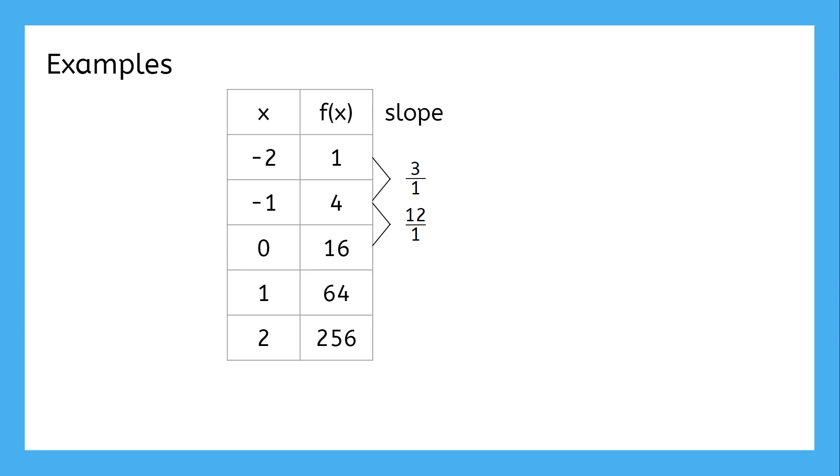For it to be exponential, there needs to be a common ratio between the slopes. Between 3 and 12, the ratio is 4. So what's the next slope? From 0, 16 to 1, 64, the slope is 48 over 1.